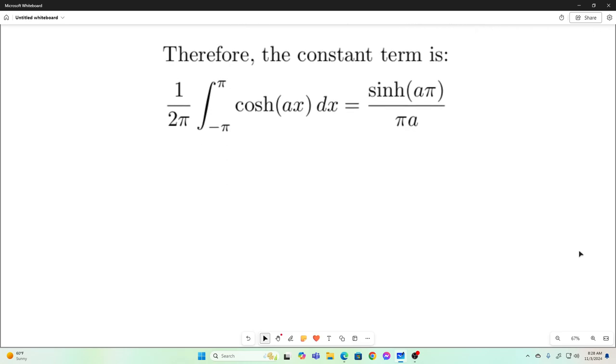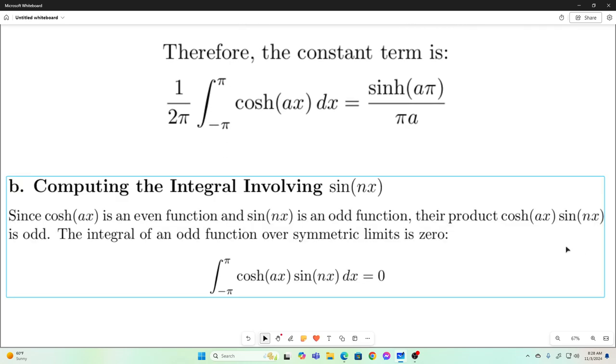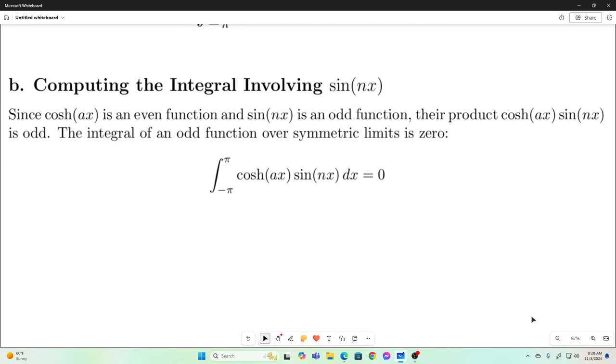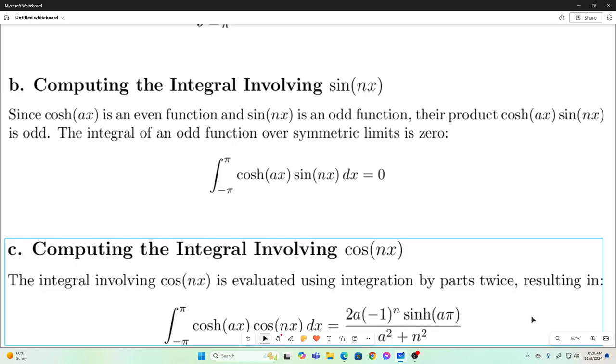All right, so the next one is just going to go to 0, the one involving the sine nx, because hyperbolic cosine is an even function, and sine is an odd function, and we have a symmetric integral. So a symmetric interval for our bounds of integration. So that whole thing is going to go to 0.